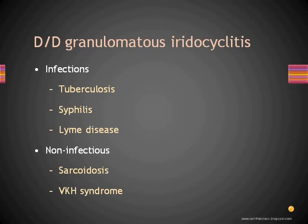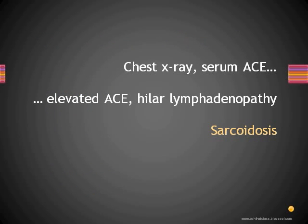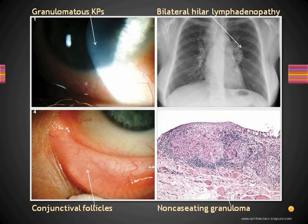Investigations were sent and the chest X-ray and serum ACE — angiotensin converting enzyme — came out positive. Chest X-ray showed hilar lymphadenopathy and serum ACE was elevated. The diagnosis was sarcoidosis. Granulomatous KP was the presenting sign. Bilateral hilar lymphadenopathy was seen on chest X-ray. Further examination revealed conjunctival follicle-like lesions, and biopsy of these revealed non-caseating granuloma.